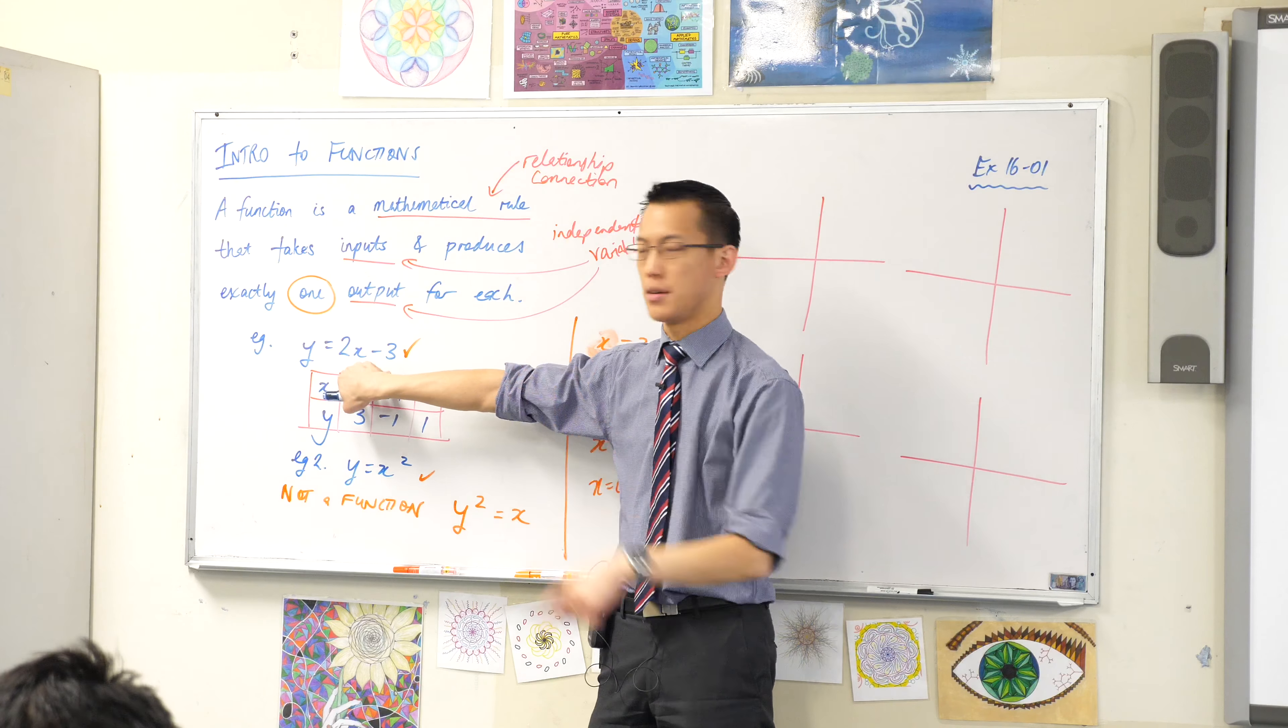So if you've got a ruler, or even your pen will do, just anything that's straight. What I want you to do is take it and put it on your page so that it's vertical. Now, watch what happens as I look through each graph.